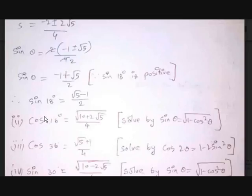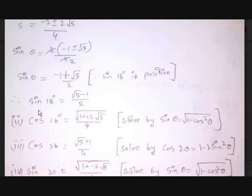The formula for cos 18 degrees is √(10 + 2√5) / 4. You should solve this on your own to build your mathematical knowledge. Use cos theta = √(1 - sin² theta), substitute sin 18 degrees, and you will get this value.